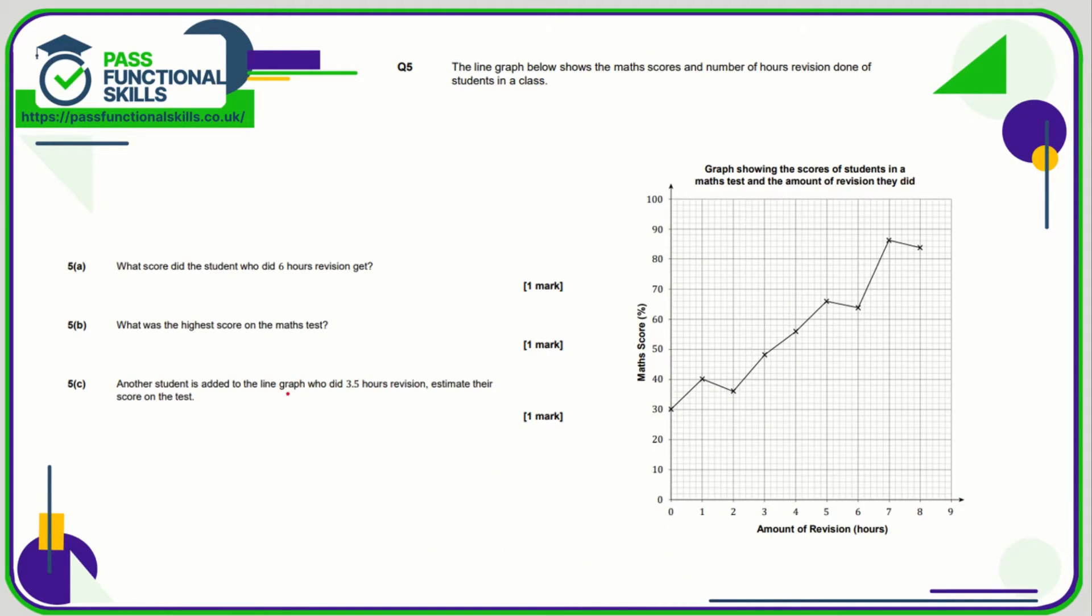Question number five, we need to interpret a line graph to answer some questions. What score did the student who did six hours of revision get? Amount of revision is along the bottom, so let's find six hours. This is the student that did six hours of revision, and he got a score of 64 percent. The highest score in the maths test was the highest dot, which is this one here. So that is 86 percent.